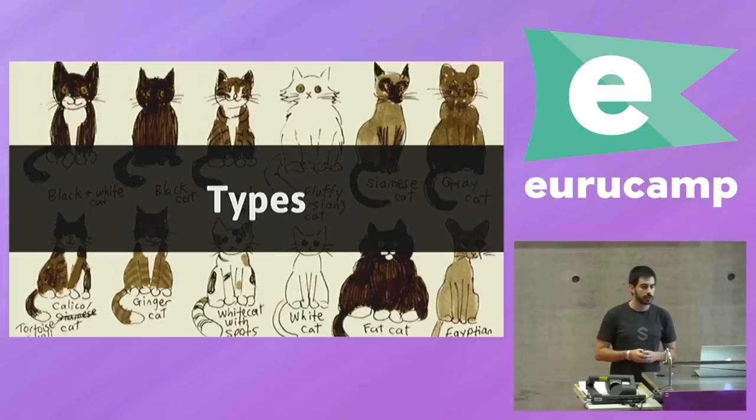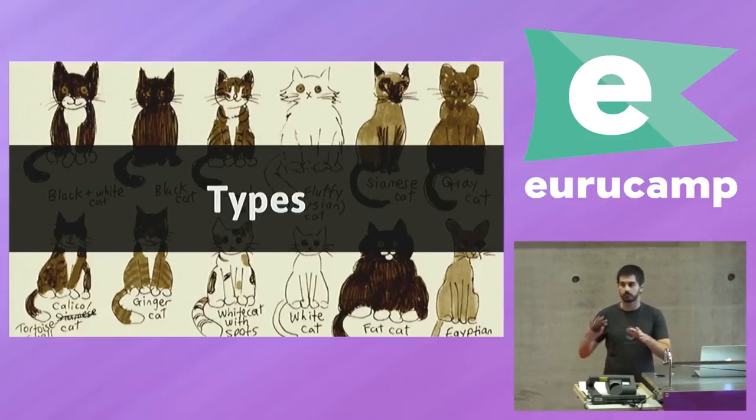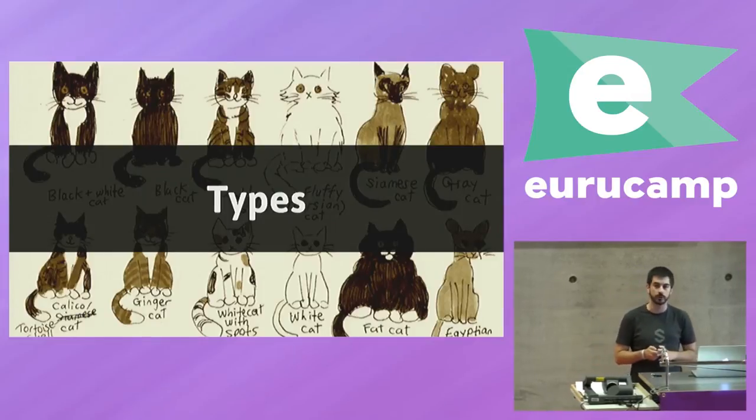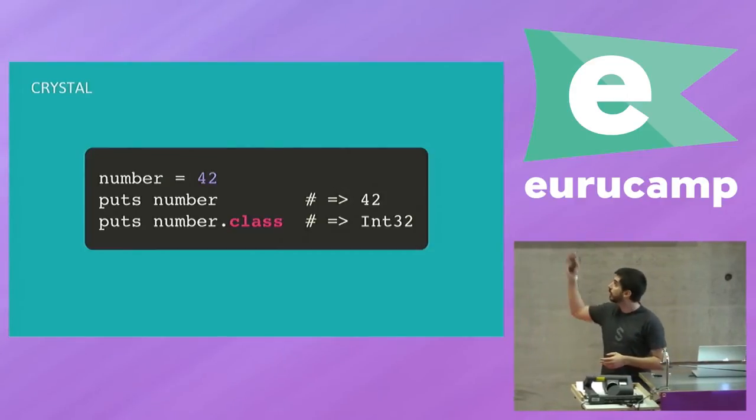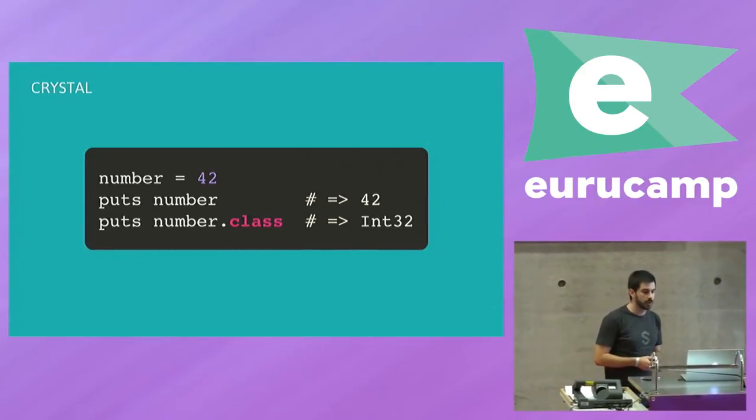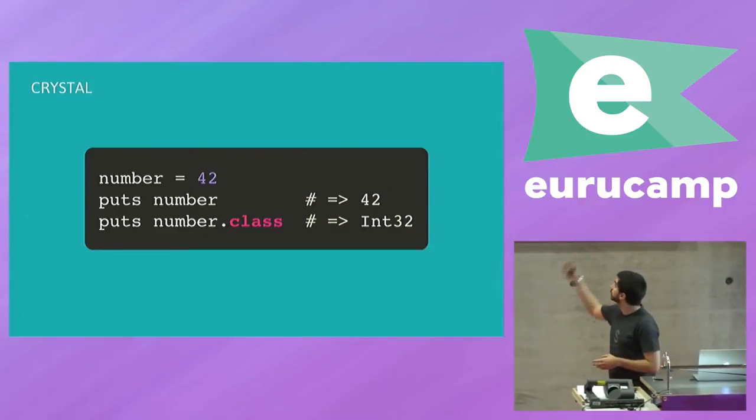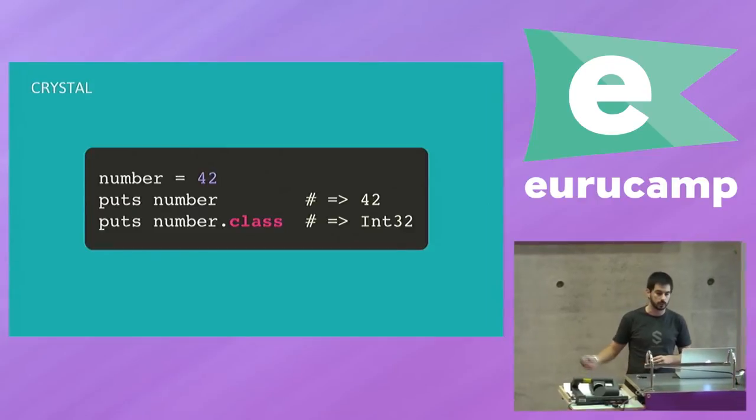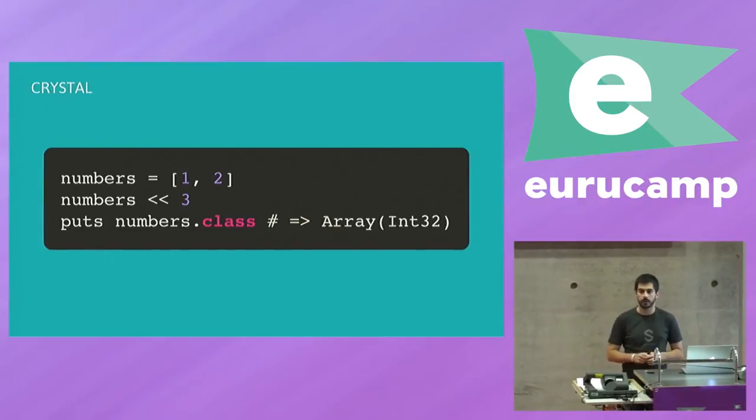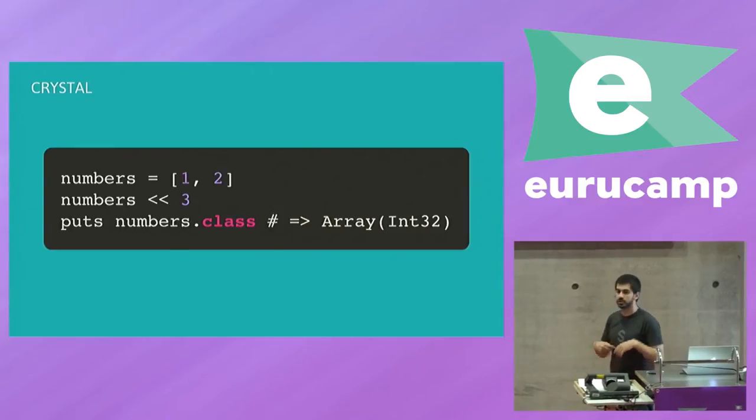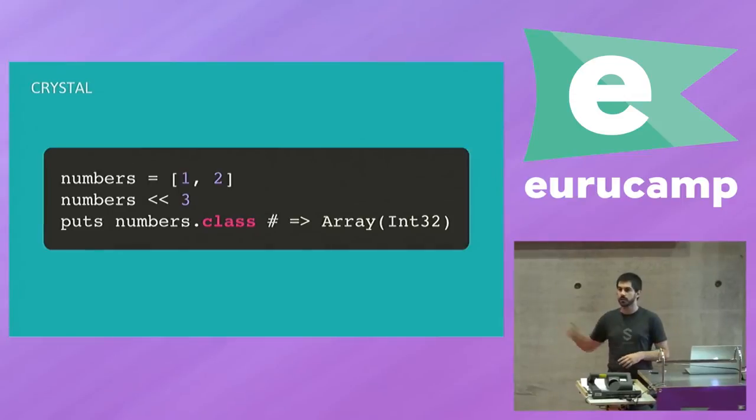As I said, Crystal is a typed language. But it does have a very good type inference. So kind of all the time it feels like you're writing Ruby and not worrying too much about types if you don't want to. But that means that you can set your variables just as you would in Ruby, right? So you have a number that's a 42. So it's an integer or a fixed number that would be the equivalent in Ruby. In Crystal it's called int32. But it just works as you would expect it to work in Ruby. You can do the same thing with arrays. You can append to it. Again, same syntax as Ruby. But now the first small difference between Crystal and Ruby, if you check the class, it's not just array. It's an array of ints. So an array of integers.